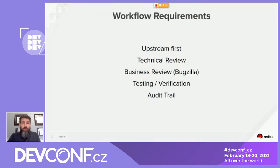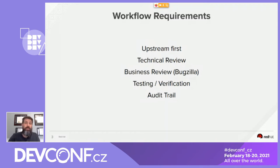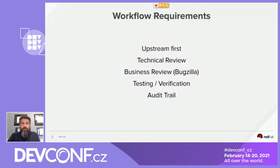All workflows start with requirements. Ours was simple: upstream first, all changes reviewed and tested, and there is an audit trail of how the change lands in the REL kernel. Upstream first means all changes push to the upstream community for review and acceptance, and then backport the final version. This allows us to leverage upstream expertise as much as possible.